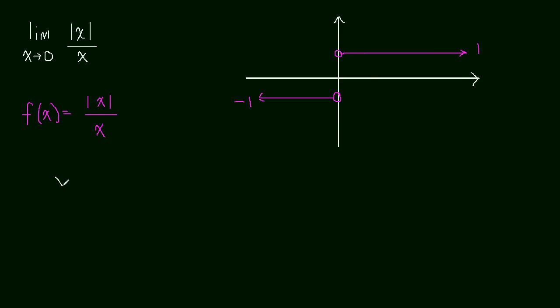So, when x is greater than 0, well, the absolute value of a positive number is just the positive number, so the absolute value goes away. So this just becomes x over x, which is equal to 1. So it doesn't matter what x is going to be, f of x will just equal 1, as long as x is greater than 0.